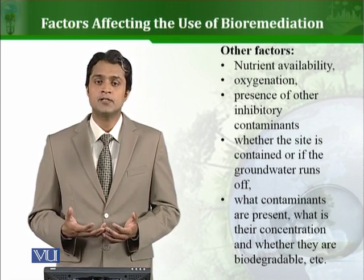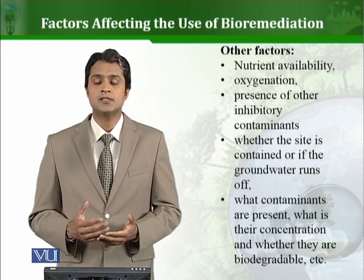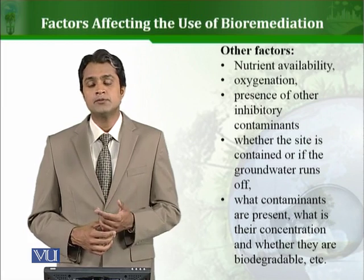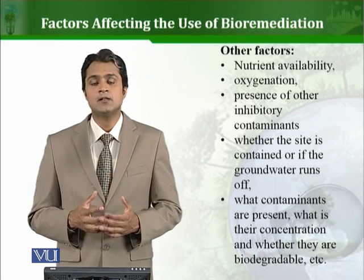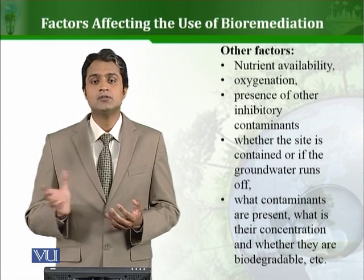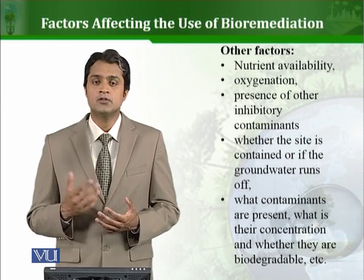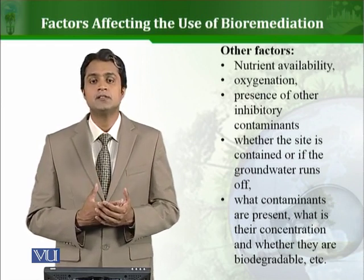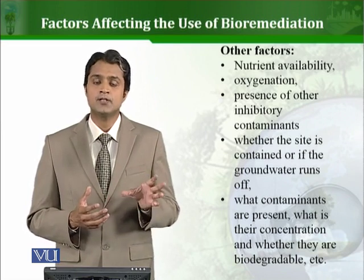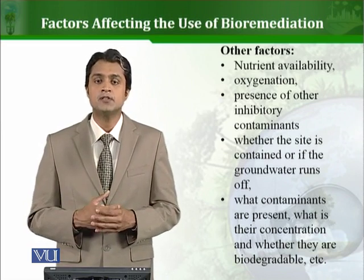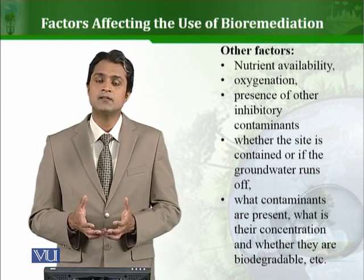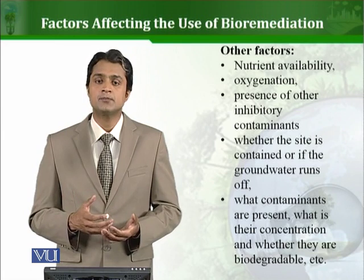The presence of other inhibitory contaminants and compounds is also important. Many contaminated sites are not contaminated by just one type of contaminant — there are many others present. So if we want to apply microbes to a polluted site, we first have to check whether that microbe will survive there. For example, if there are three toxic compounds A, B, and C at a site, and our microbe is only resistant to compound A, then due to compounds B and C the microbe will be destroyed and the output will be zero.